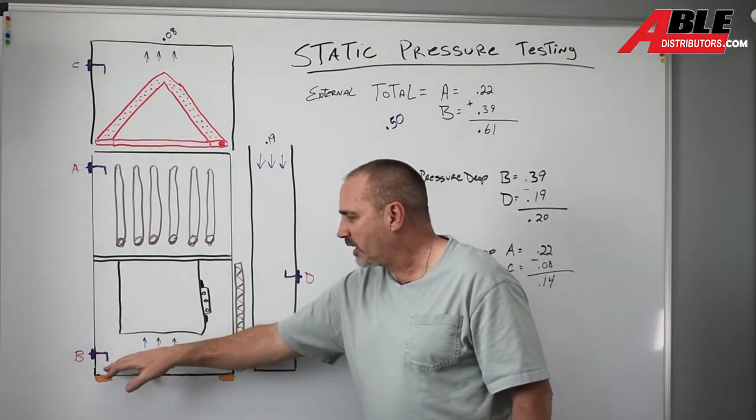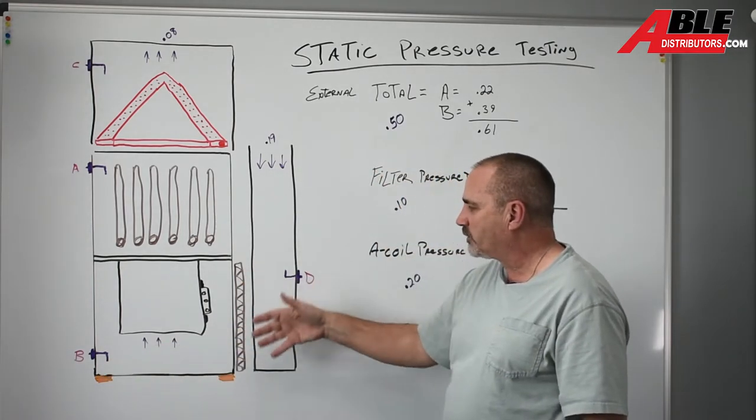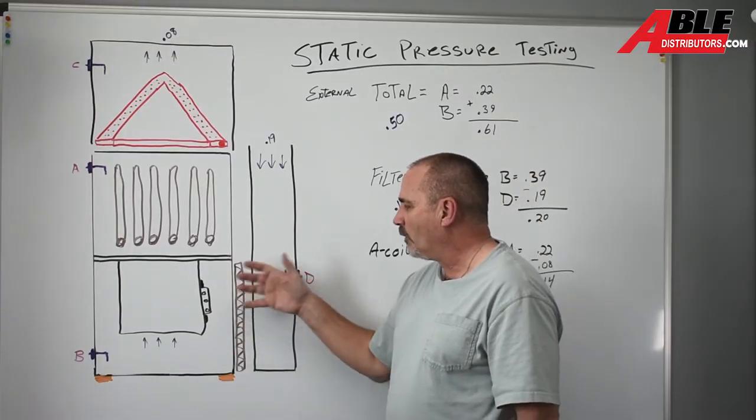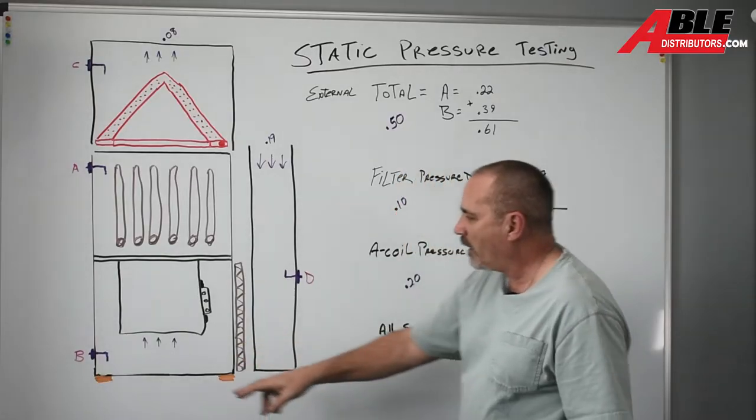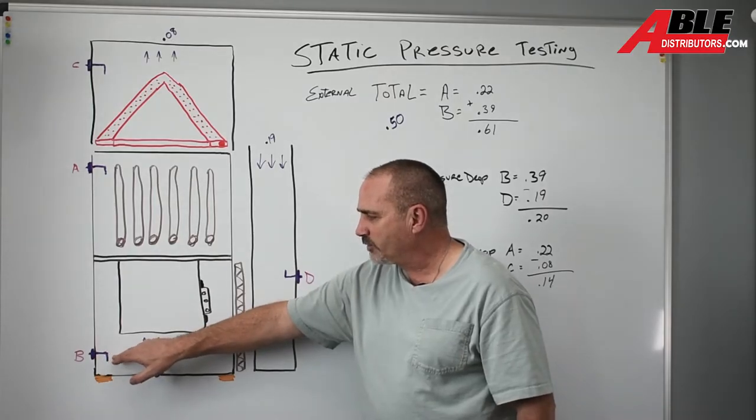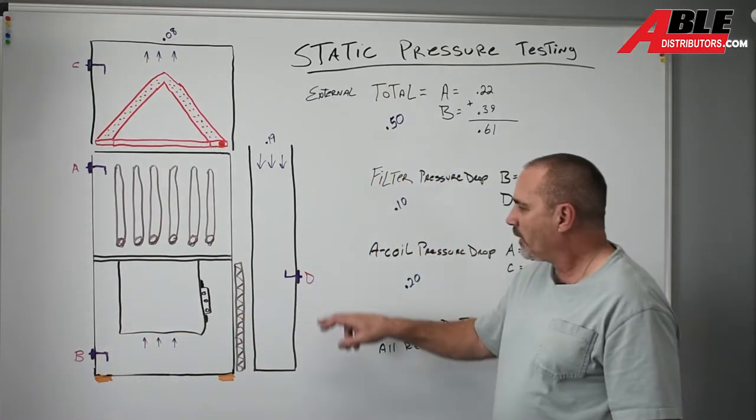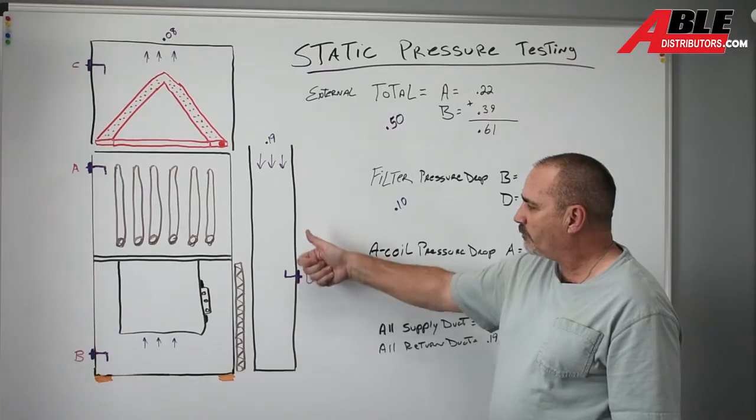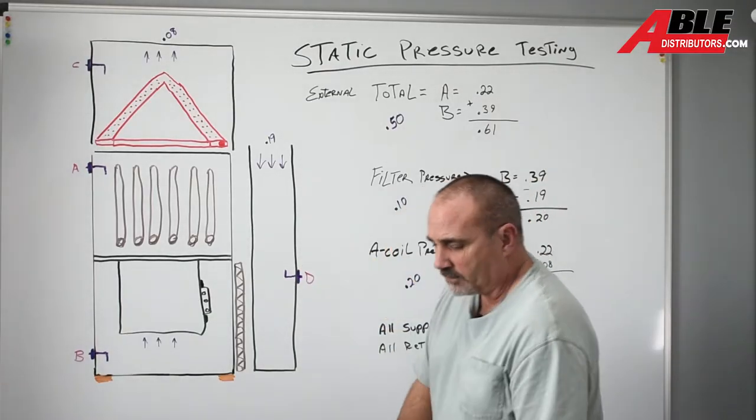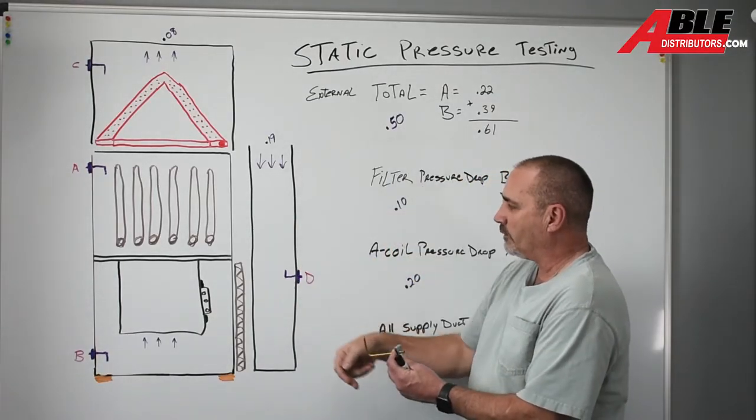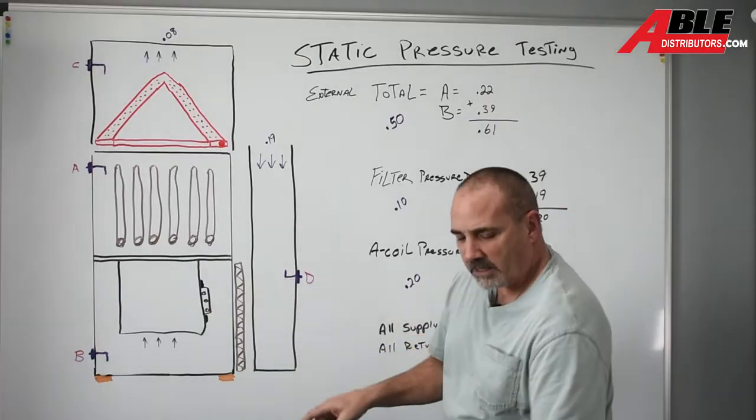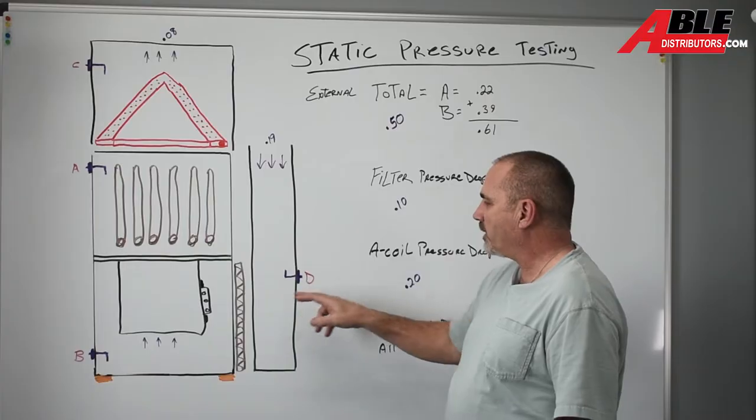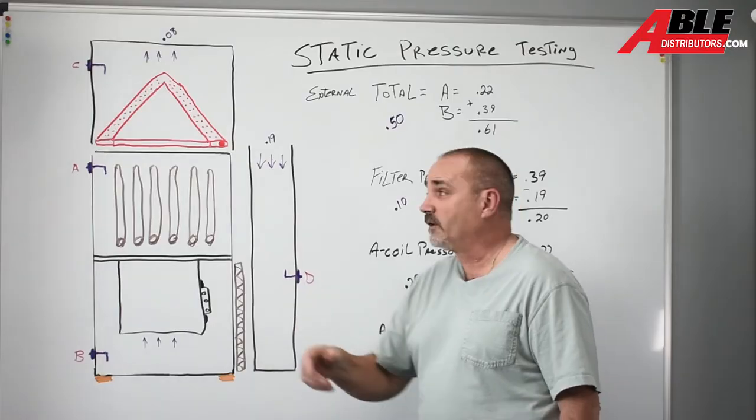So the next step is to check the filter, how much restriction, how much are we losing going across that filter. So now we leave one probe in position B in the blower compartment, and we're going to put another one with the probe facing up since the return air comes down. And we're going to take B subtract D and that's going to tell us how much we're losing across that filter.